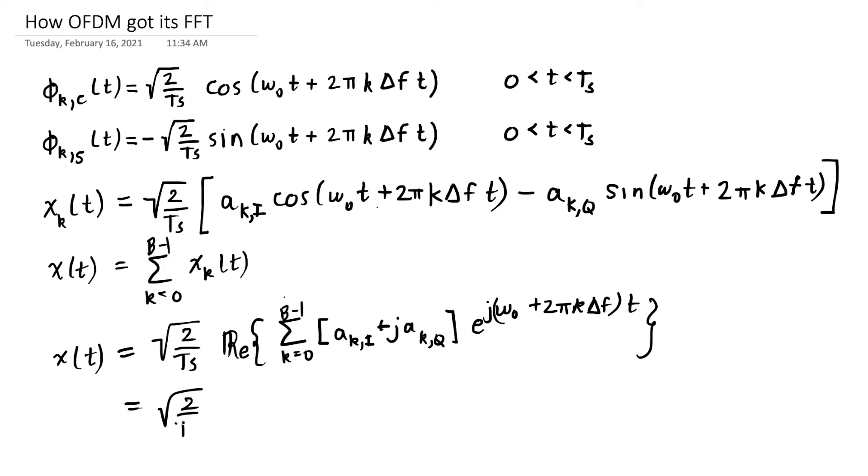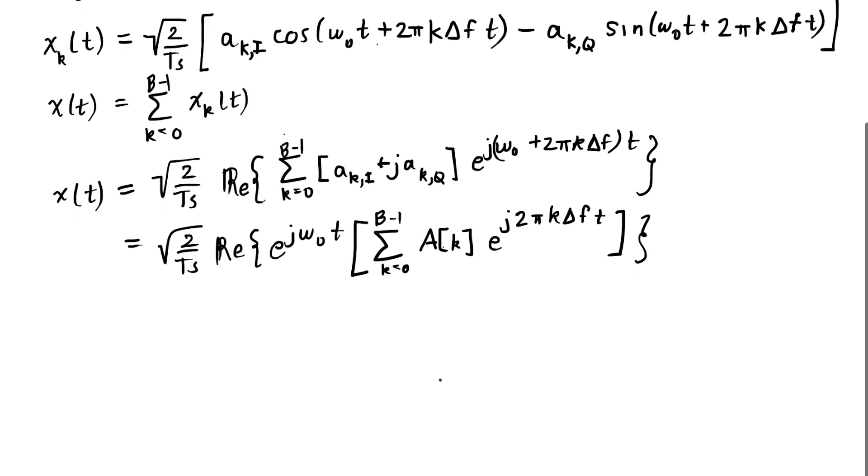And I can even make this more explicit and match the complex baseband form that we've used by pulling out an e to the j omega_0 t out front, and then having this sum. And this delta F is 1 over T sub S. So what I can do actually is make that a t divided by T sub S. And here, this a of k is this complex value that represents the symbol on the k subcarrier.